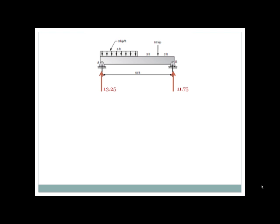After calculating these reactions we can draw the shear diagram. The shear diagram will look as such. It goes up to thirteen point two five kips because of the left hand reaction. The uniform load of three kips per foot knocks the shear on the beam down over that five foot section. At the end of that five foot section it's at negative one point seven five kips.